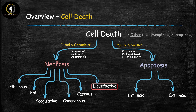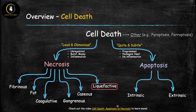We're going to be learning about liquefactive necrosis, which is a type of cell death. Cell death can occur by a bunch of different mechanisms. The main two are apoptosis and necrosis, which are basically the opposite of each other in many ways. Apoptosis can occur by intrinsic or extrinsic pathway. Necrosis has six different types, each reflecting a different underlying tissue morphology, and the one we're focusing on today is liquefactive necrosis.